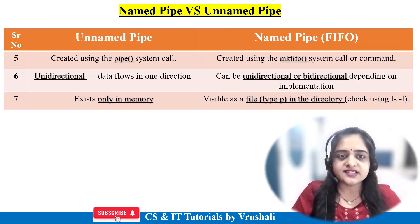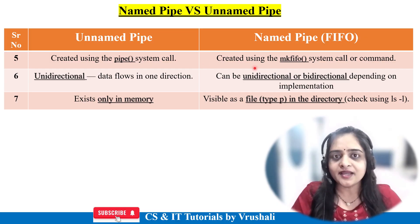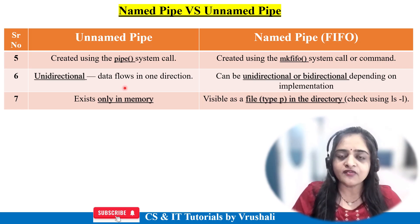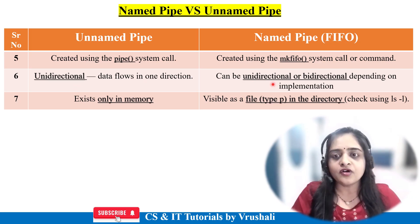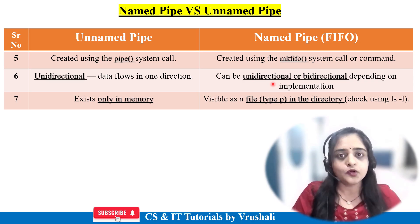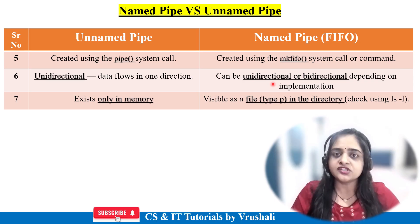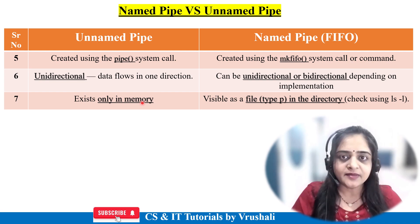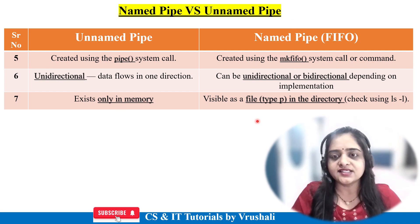Unnamed pipe is created using the pipe() system call, while named pipe is created using the mkfifo command or system call. Unnamed pipe has unidirectional data flow, whereas named pipe supports bidirectional data exchange — Process 1 can send information to Process 2 and Process 2 can send information back to Process 1. Unnamed pipe exists only in memory, but named pipe exists in the file system directory.